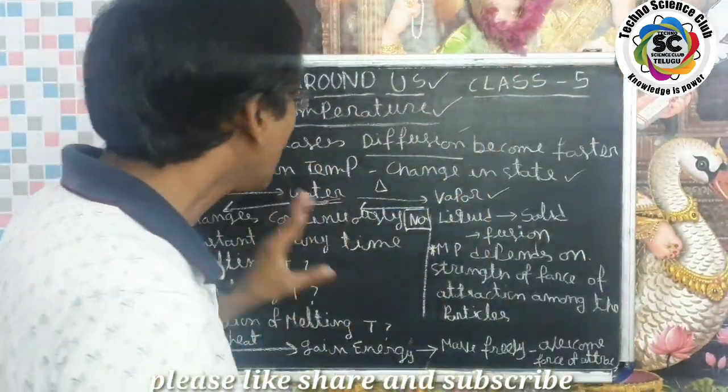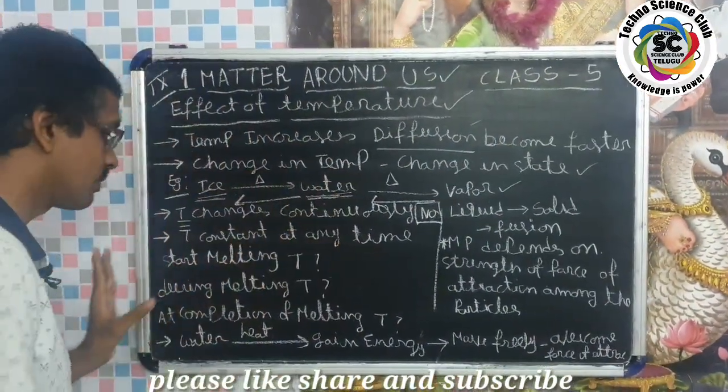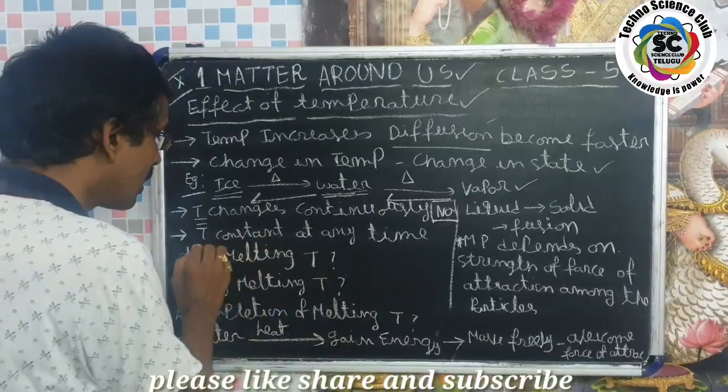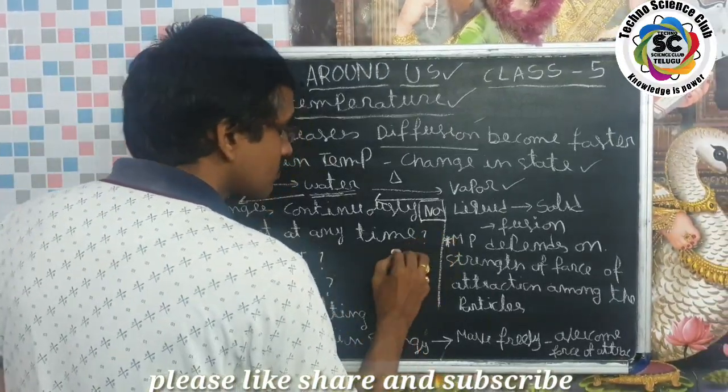Temperature does not change continuously at all stages — there are points where temperature remains constant. For example, temperature is constant when ice cubes are totally melting into water; during that phase change, the temperature does not change.